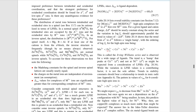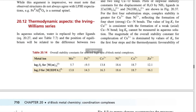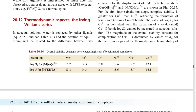According to the Irving-Williams series, the order of complex stability is: Mn < Fe < Co < Ni < Cu. So iron forms the least stable complex, then cobalt, then nickel, and copper forms the most stable complex. This series is observed for a wide range of ligands. The log β value tells you how stable a complex is — the higher the log β, the greater the stability.